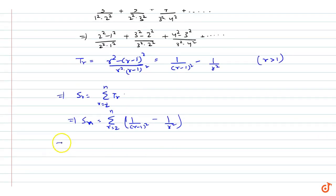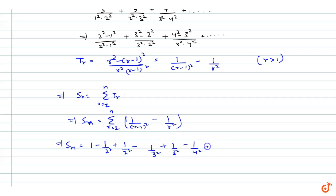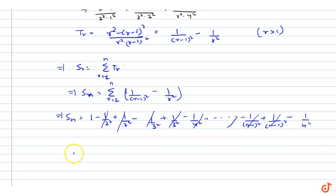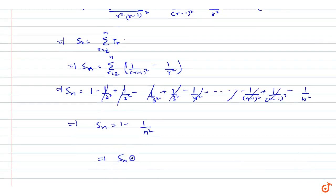Expanding this telescoping series: S_r equals 1 minus 1 by 2 square, plus 1 by 2 square minus 1 by 3 square, plus 1 by 3 square minus 1 by 4 square, and so on, up to 1 upon (n minus 1) square minus 1 upon n square. All intermediate terms cancel out, leaving S_r equals 1 minus 1 upon n square, which gives us the sum of the series as n square minus 1 upon n square. This is our solution.